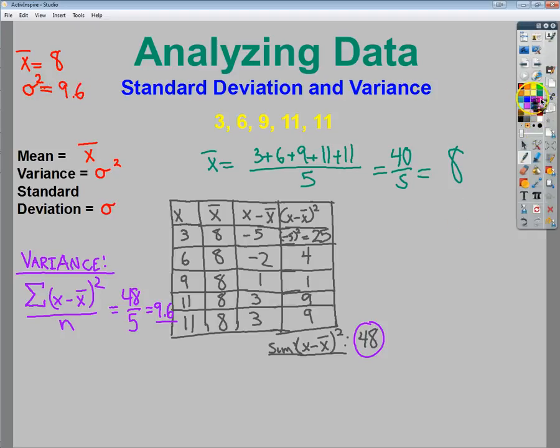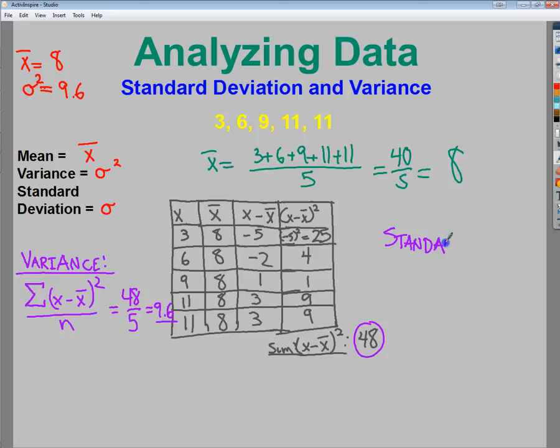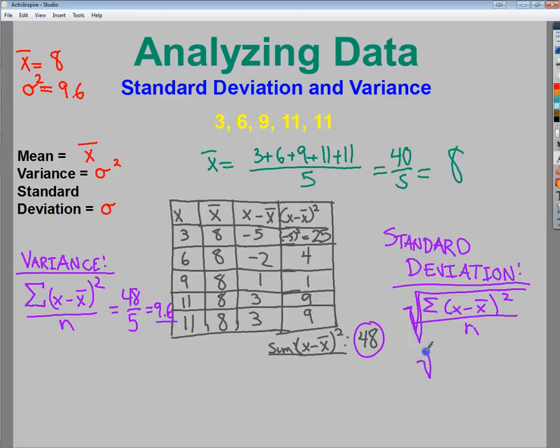And, all I need to do for my standard deviation is essentially just take the square root of the variance. So, its formula looks like this. It looks crazy when you actually write it out. It does, however, look super official. Like, you're doing a lot of math, when really, not so much. So, the square root of the sum of x minus the mean squared over n. So, basically, you're just taking the variance, and you're finding the square root of it. So, the square root of 9.6.